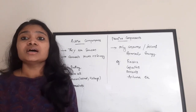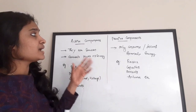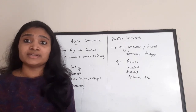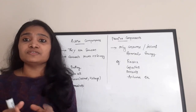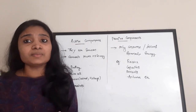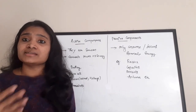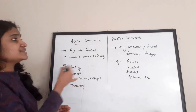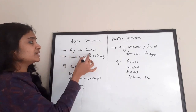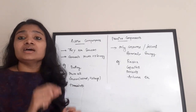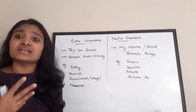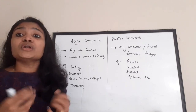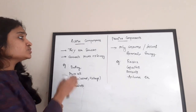First, moving on to active and passive components. An active component is a component which is by itself able to generate some energy or power, or it should be able to amplify a signal. Such components are called active components. They are generally sources — that is, a voltage source and current source used in our circuits are active components because they generate certain energy or power. They sometimes consume too, but mostly they are considered as producers or generators of energy or power.